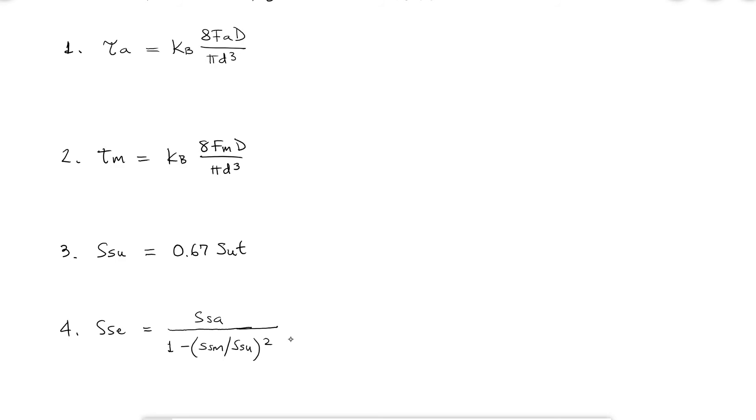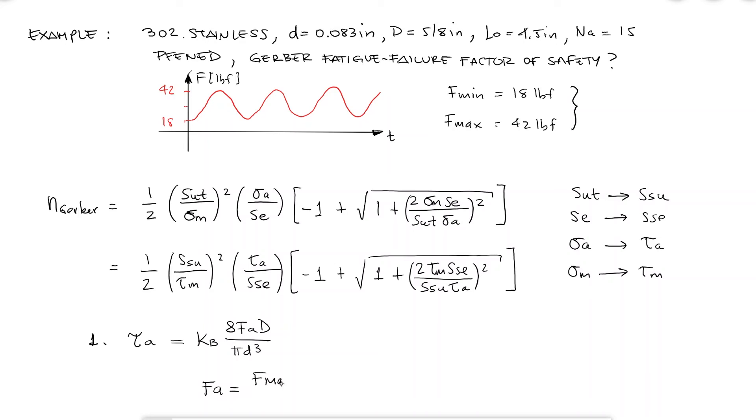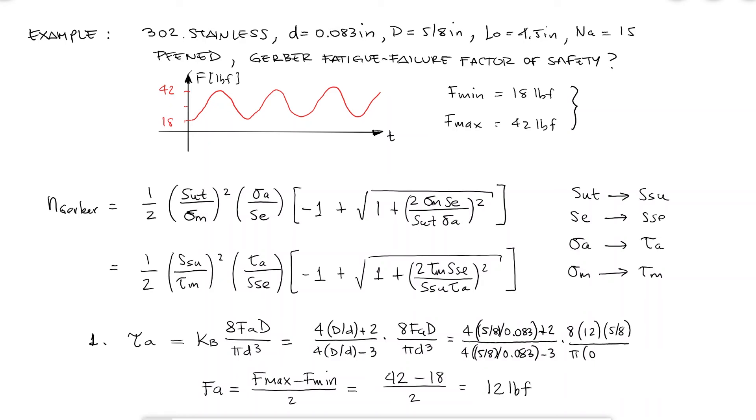For the alternating shearing stress, I need to find the alternating force, and since I know that the force will go from 18 to 42, I know the amplitude or the alternating force will be 12 pounds. Using this value for F_A and the wire diameter and the coil diameter for the curvature correction factor K_B, I would find that this torsion is 24.7 ksi.